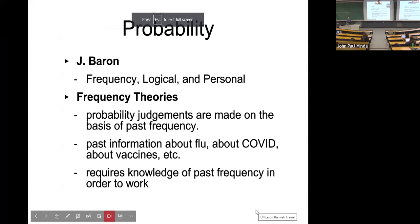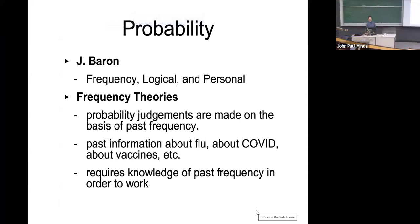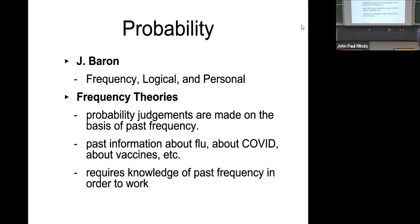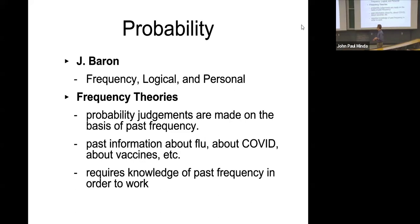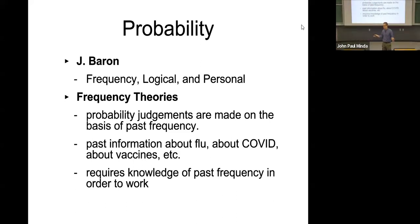Now let's get into today's content. We'll spend about five minutes reviewing topics likely to appear on the final exam. First: the three theories of probability. These are important because whenever we assume people use probability in decision making or judgment, we need to understand where that probability information comes from. Jonathan Baron suggests three distinct approaches.